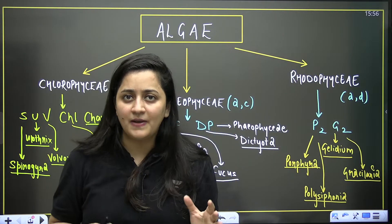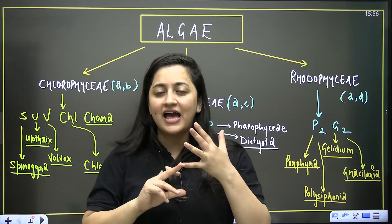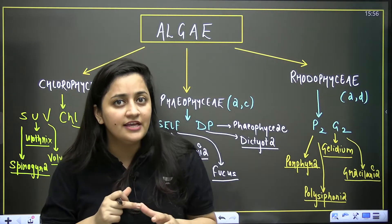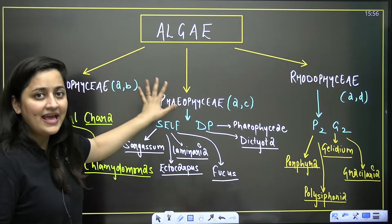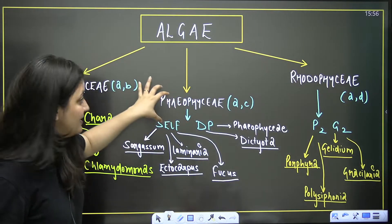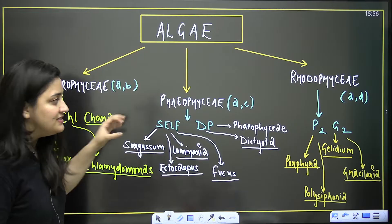In the case of plants, we're going to talk about algae, bryophytes, pteridophytes, gymnosperms, and angiosperms. Let's start with algae, the simplest plants, in which we talk about three classes: Chlorophyceae, Phaeophyceae, and Rhodophyceae.